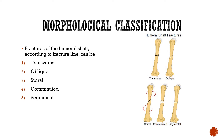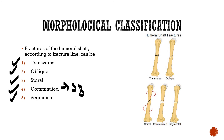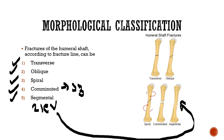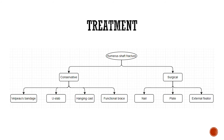The morphological classification is based on the shape of the fracture line. It can be transverse, oblique, spiral, comminuted, or segmental. Comminuted means three or more fragments. Segmental means fractures occurring at two levels — you can see fractures at two separate levels on the bone.